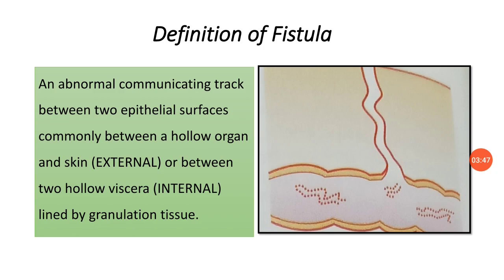Now the definition of fistula: as we know, fistula means a pipe or fluid — an abnormal communicating track between two epithelial surfaces, commonly between a hollow organ and skin (called an external fistula), or between two hollow viscera (internal fistula), or between vessels. It is lined by granulation tissue which can become epithelialized at a later stage. The key point is that it is an abnormal communicating track connecting two epithelial surfaces.